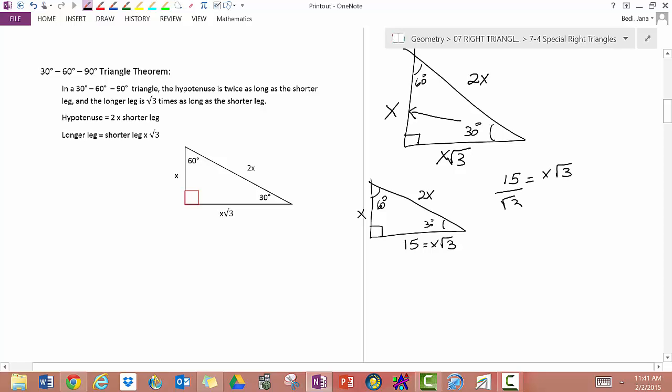Divide both sides by root 3. And you get 15 over root 3 equals x. We need to get rid of that radical in the denominator. So, multiply both numerator and denominator by root 3 over root 3. Then you get 15 root 3 over 3 equals x. So, this is 5. So, x is 5 root 3.